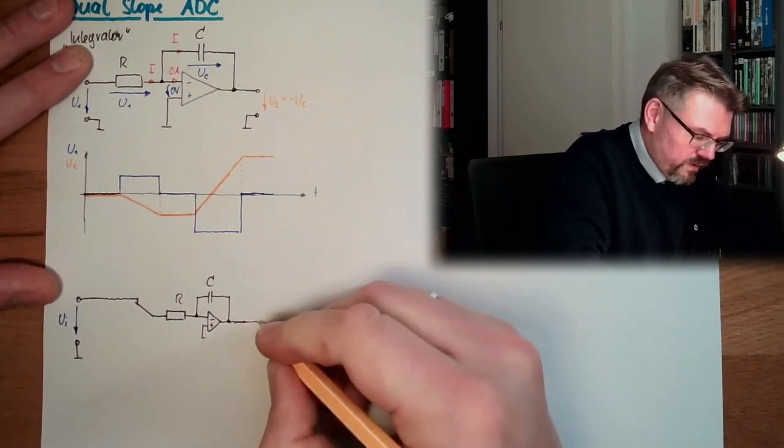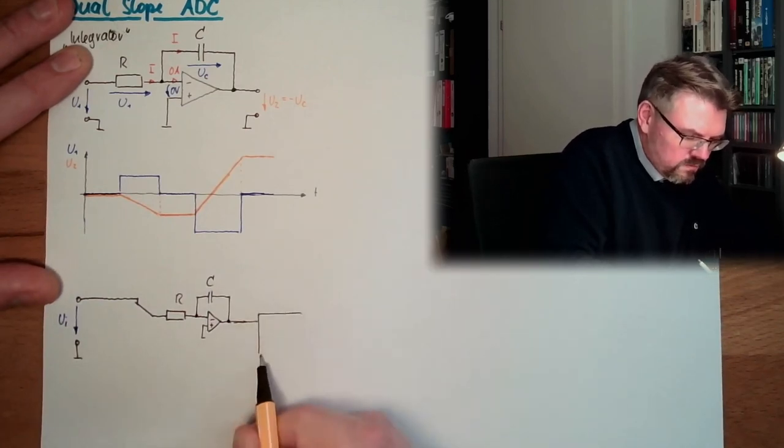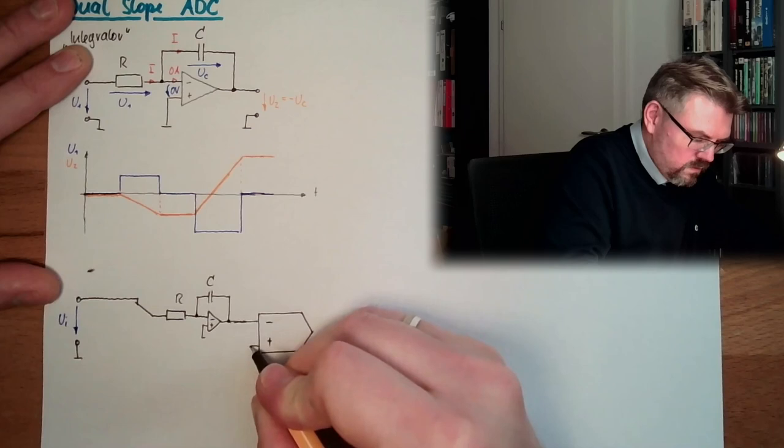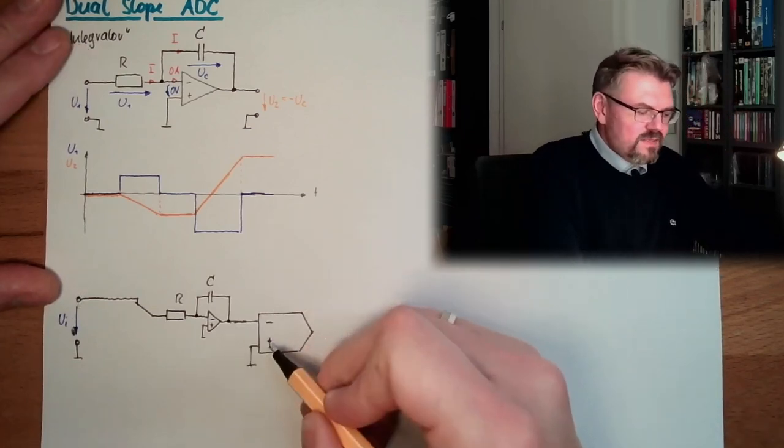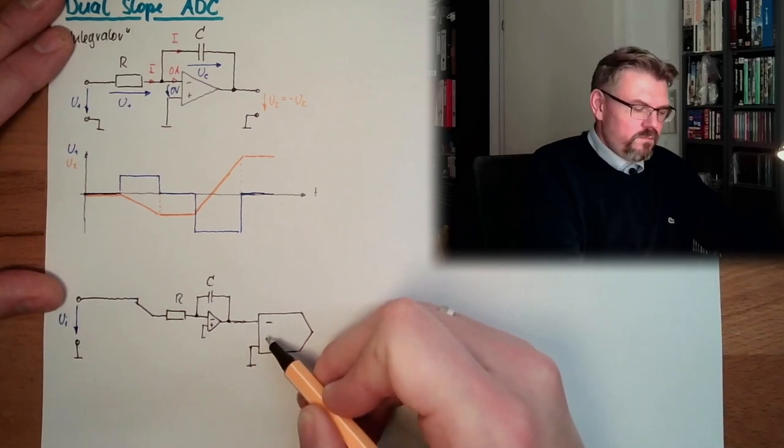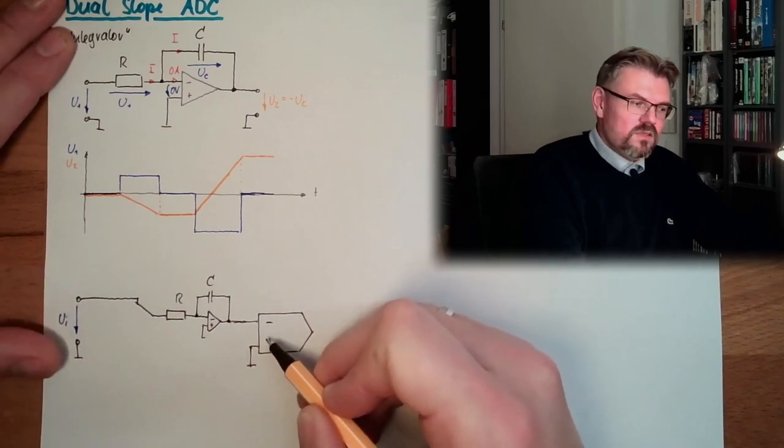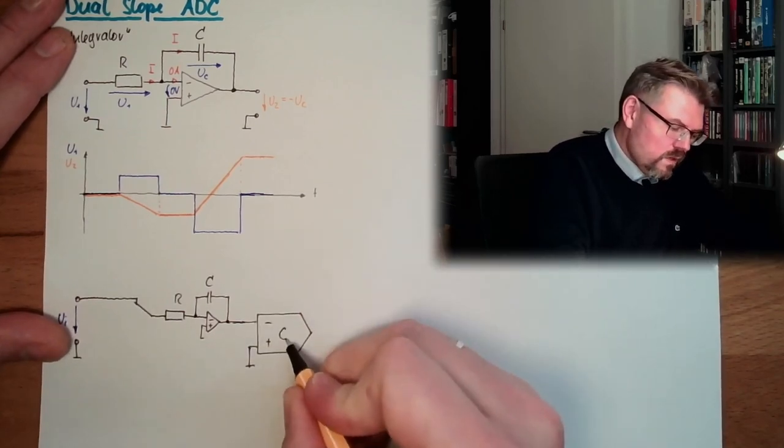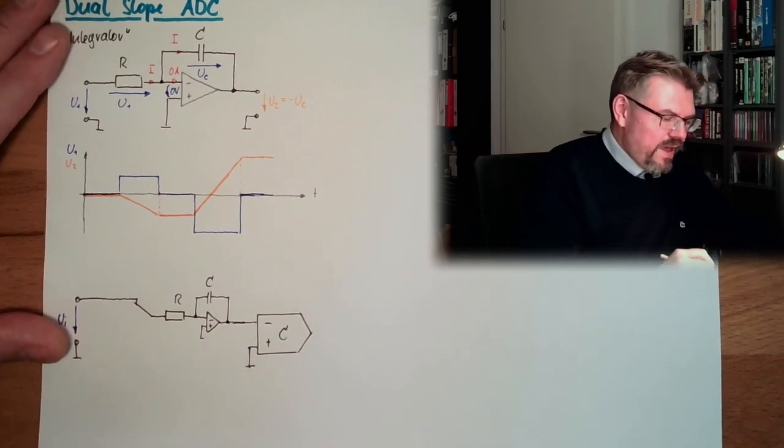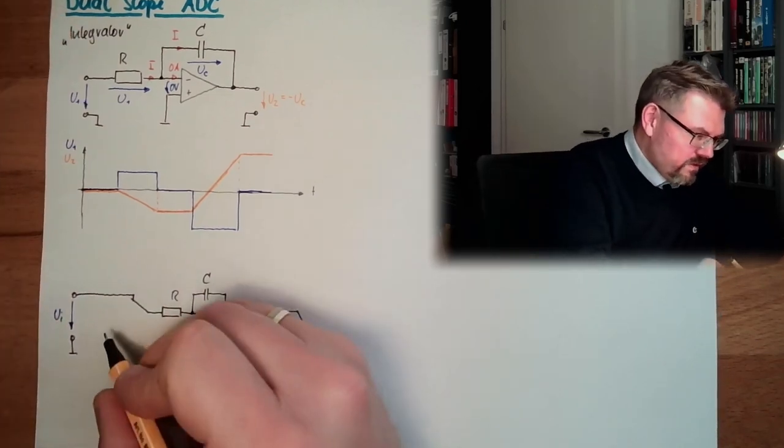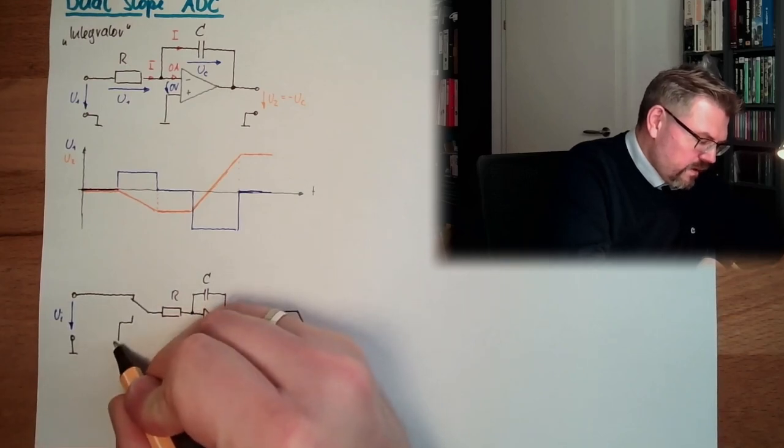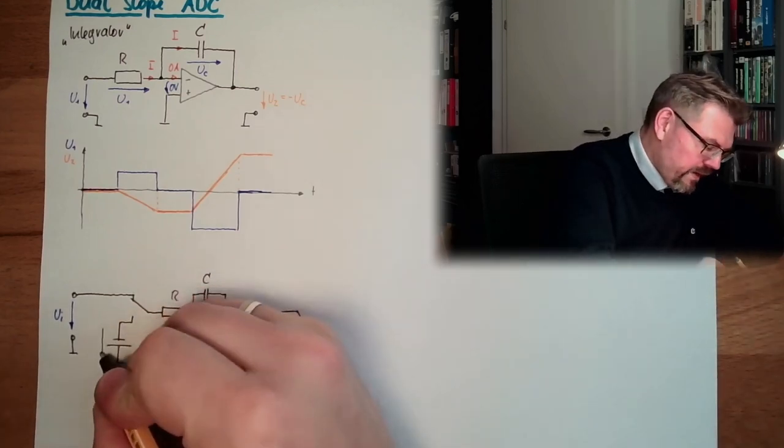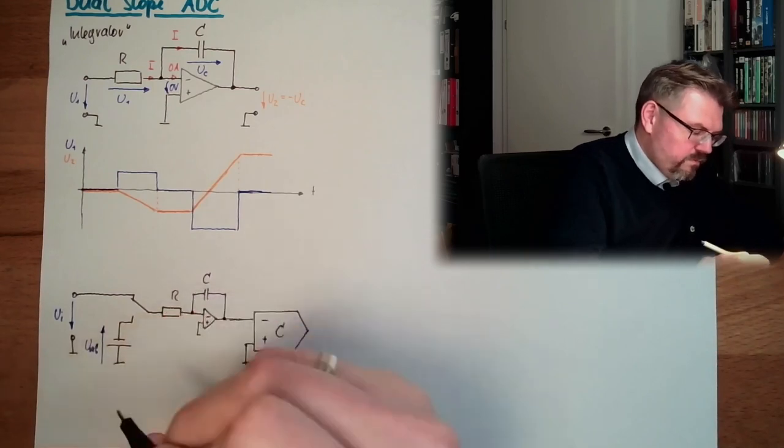And here after that we have a comparator. And we compare if this is bigger than, smaller than zero. As long as it's smaller than zero, if this is getting bigger than zero the comparator output will be zero. So there's a comparator. And actually what this does now, there is also a switch in the other direction, and here we have a reference voltage, but a minus one, U ref. It's a minus reference voltage.